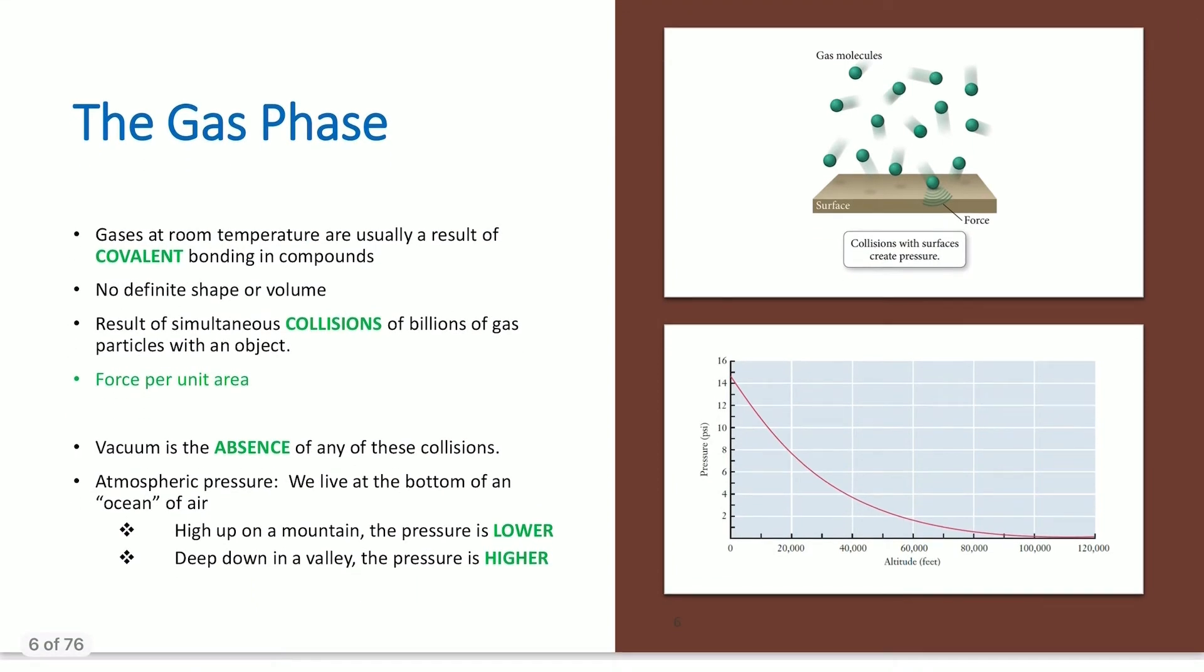So your gas phase. Gases at room temperature are usually a result of covalent bonding in compounds. They have no definite shape, no definite volume. The result of simultaneous collisions of billions of gas particles within an object is your force per unit area. A vacuum, which sometimes we'll talk about putting things in a vacuum, not like a vacuum like cleaning your house, but like a vacuum on an instrument, we'll say we're putting it under vacuum. A vacuum is the absence of any of these collisions. No collisions are happening.